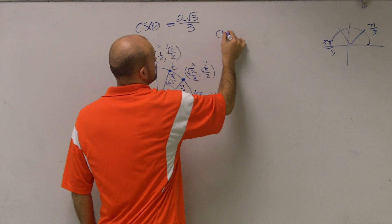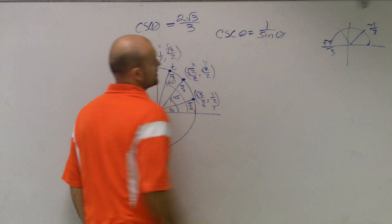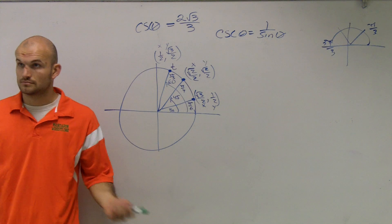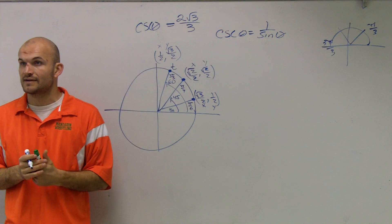Cosecant of theta equals 1 over sine of theta. That's in your blue box. Cosecant of theta is the same thing as 1 over sine of theta.